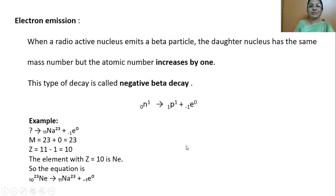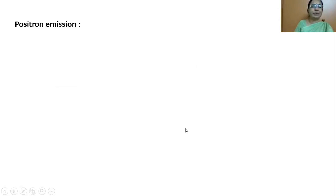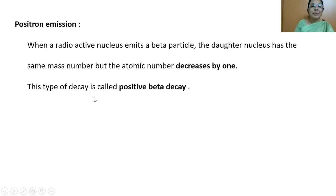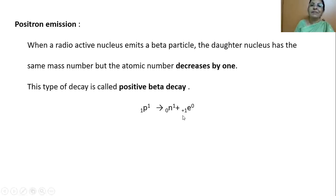This is what is called electron emission. The second process is positron emission. When a radioactive nucleus emits a positron, the daughter nucleus has the same mass number but the atomic number decreases by one — this is called positive beta decay. Here, a proton is getting converted into a neutron and a particle with charge plus one unit is emitted. This is opposite to the electron which has charge minus one, so we call it a positron.